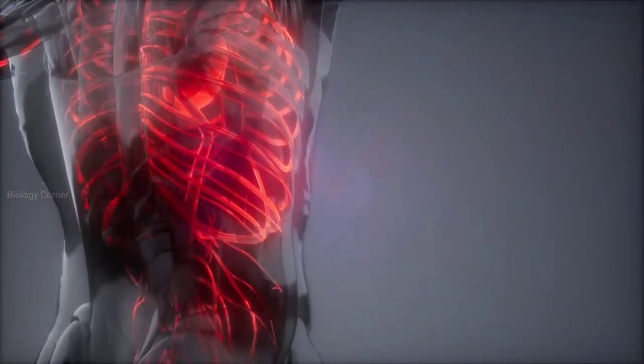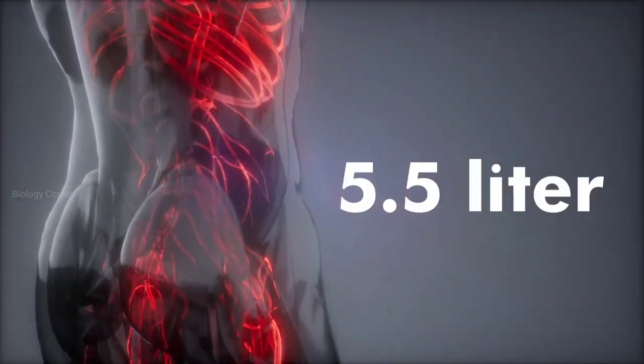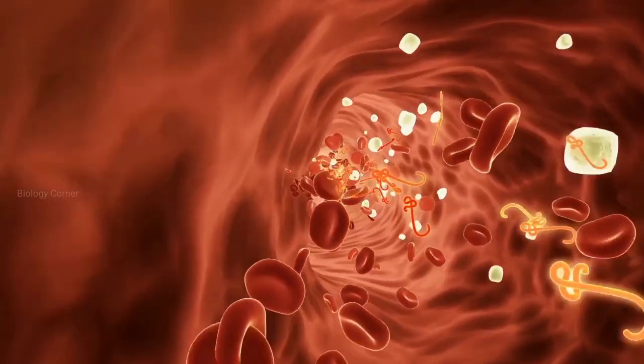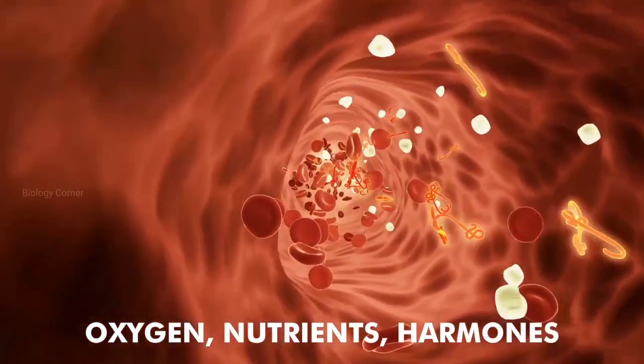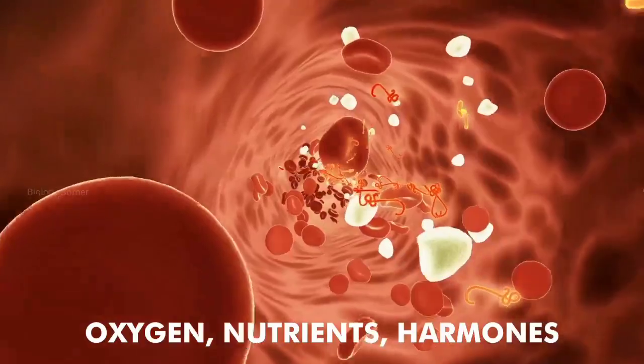An average adult has about 5.5 liters of blood in his body. Our blood transports oxygen, nutrients, hormones and many other important components.